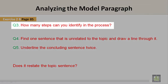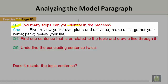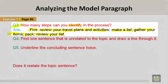Analyzing the model paragraph. Exercise 2b, page 85. Question 3: How many steps can you identify in the process? The answer is 5. You want to review your travel plans and activities, make a list, gather your items, pack, and review your list.